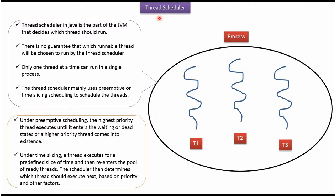In this video tutorial I will cover Thread Scheduler. Thread Scheduler in Java is part of the JVM. Thread Scheduler decides which thread to run first, which thread to run second, and which thread to run third and so on. There is no guarantee that which runnable thread will be chosen to run by the Thread Scheduler.